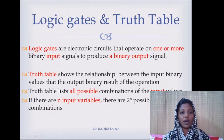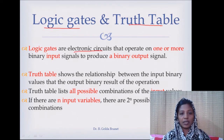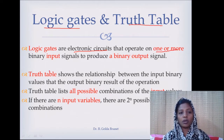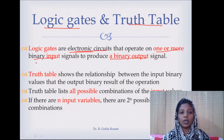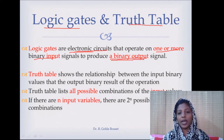Next, we will see what is a logic gate and truth table. A logic gate is an electronic circuit that will take 1 or more binary inputs and give 1 binary output. That is, it is a small electronic circuit that accepts 1 or more 0s or 1s as input and produces a single binary output.